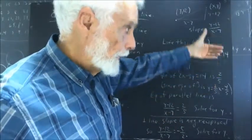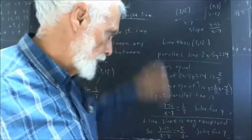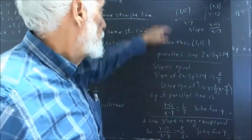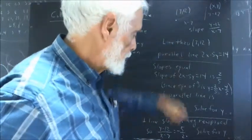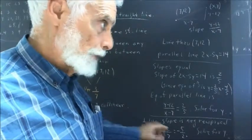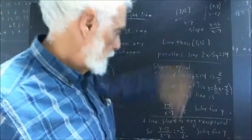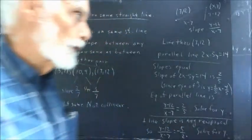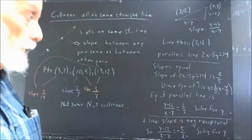The reciprocal is five-halves. The negative of that is negative five-halves. So, in that case, our slope from 7,12 to x,y is going to have to be negative five-halves. So, we have y minus 12 over x minus 7, which is the slope from 7,12 to x,y, set equal to negative five-halves, and we solve that for y. I'll go ahead and write down those solutions.